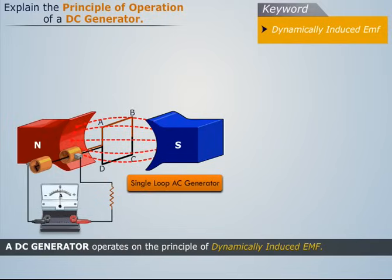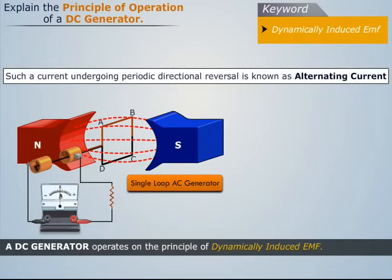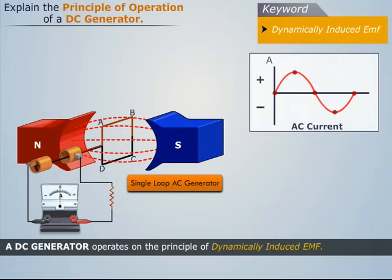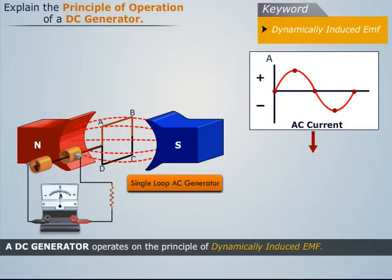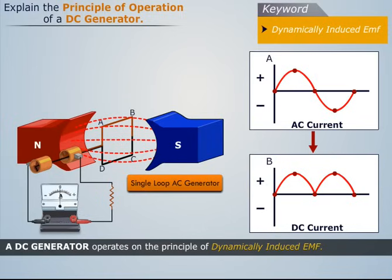We also see that after every half rotation, the sides AB and CD of the loop swap their positions. Thus the direction of current flowing through them gets reversed. Such a current undergoing periodic directional reversal is known as alternating current. To change this bi-directional alternating current into unidirectional DC current, split rings are used.